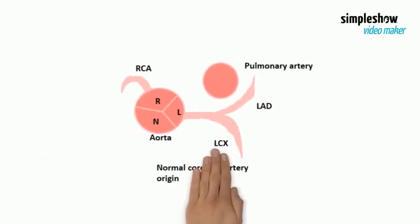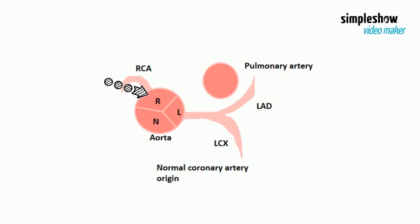Now we will show some examples of coronary artery anomalies. This is a normal coronary artery — here we can see the right coronary artery originating from the right coronary cusp and the left coronary artery from the left coronary cusp.